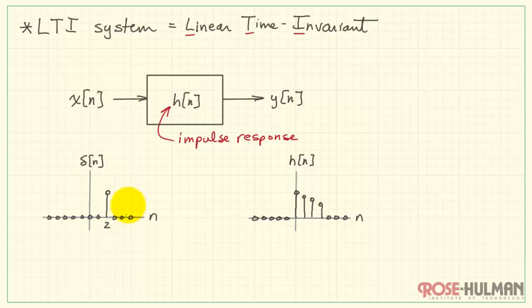If we shift the impulse, in this case delaying it by a value of 2, which would turn that into delta of n minus 2, provided this system is time-invariant, or shift-invariant is another way of thinking about that, the impulse response simply slides over by the same amount. So we would say that the output then is h of n minus 2.